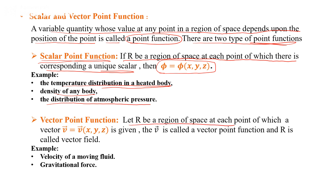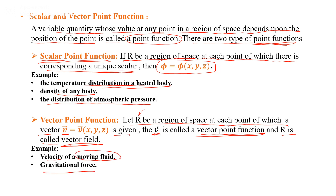A vector point function is defined when at each point of a region r there corresponds a unique vector v. That vector v is called a vector point function, and the region r is called a vector field. Examples include the velocity of a moving fluid and gravitational force.